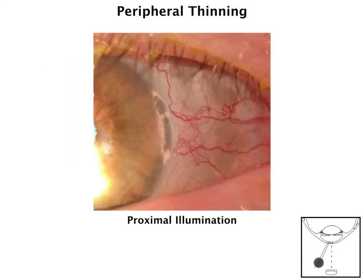One of the more difficult pictures to get is peripheral thinning. The best way to do this is with proximal illumination — I'm shining the slit beam a little bit off to the side next to the area of interest, and it really helps to highlight that peripheral thinning. You'd have the slit lamp straight on and the light just a little bit off, and you could even maybe rotate the whole tower just a little bit to get a better angle — it really depends on the patient to see what works best.